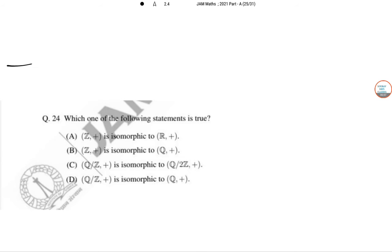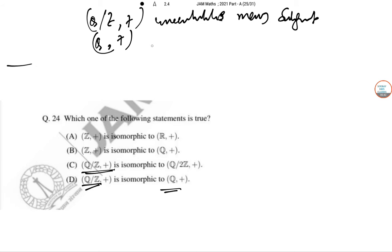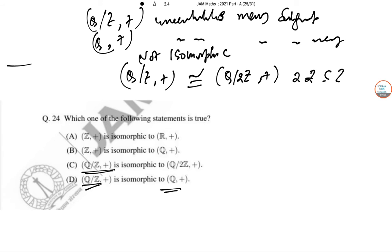Next. So, which of the following statement is true? So, if we discuss with respect to Q of 2Z and Q of Z, let us do it with respect to Q of Z comma plus. This is an uncountable many subgroup. This has uncountable many subgroups. And Q comma plus does not have uncountable many subgroup. That cannot be isomorphic. So, Q of Z plus, Q 2Z plus. This is 2Z of Z. So, Q of Z belongs to Q of 2Z.